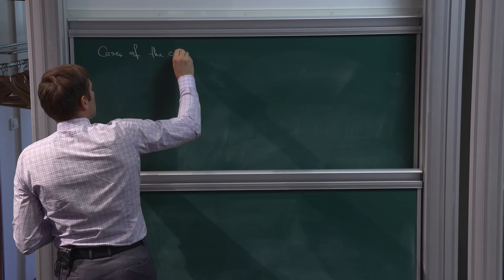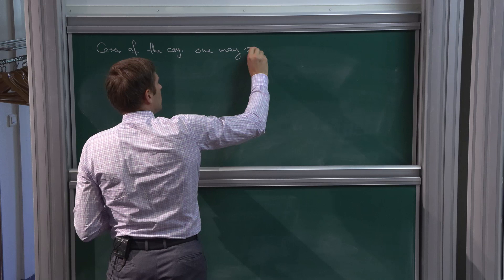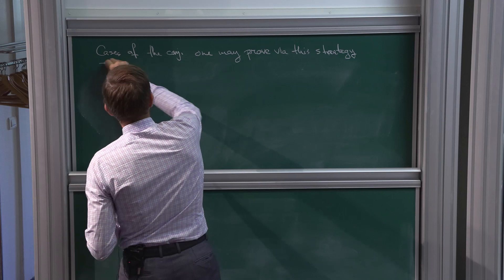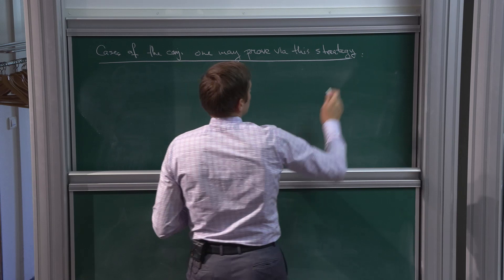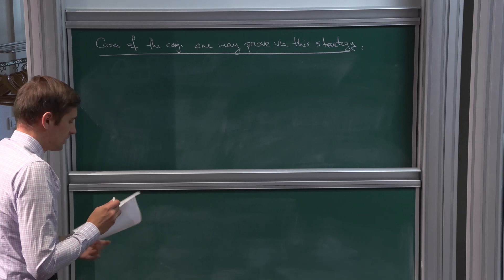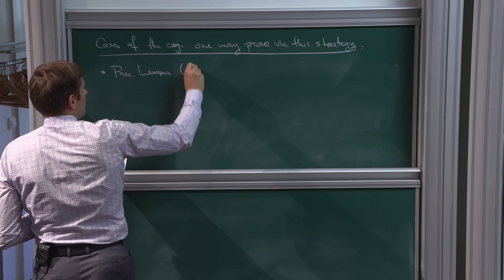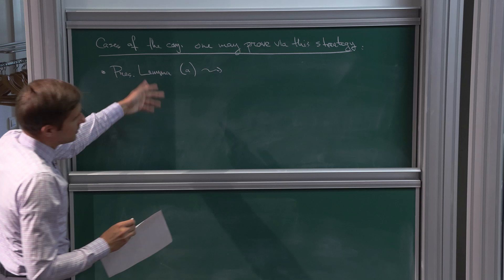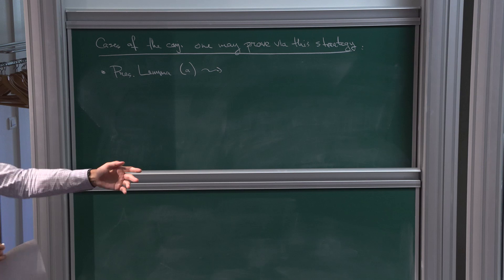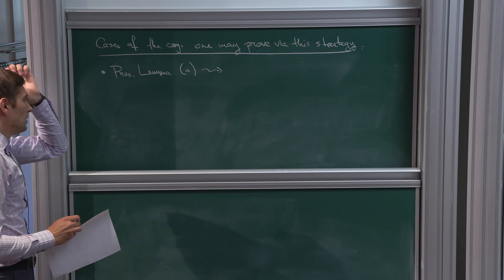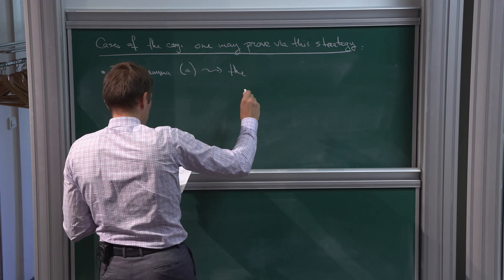Let me mention which cases of the Grothendieck–Serre conjecture can be proved using this strategy. In contrast to the Gersten case where the DVR case was a major stumbling block, the DVR case here is known due to Nisnevich. The case when R contains a field follows from the presentation lemma over a field strategy. In mixed characteristic under the codimension-≥2 assumption, one gets the case when R is unramified and G is quasi-split. The people involved include Panin, Fedorov, and others.